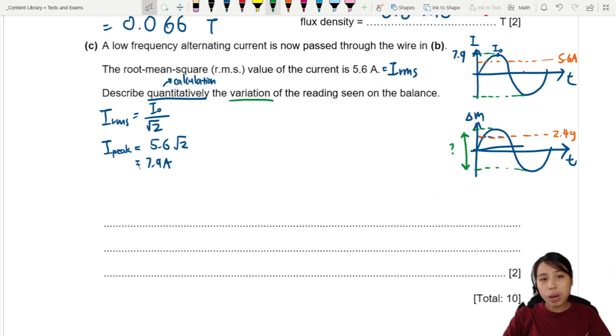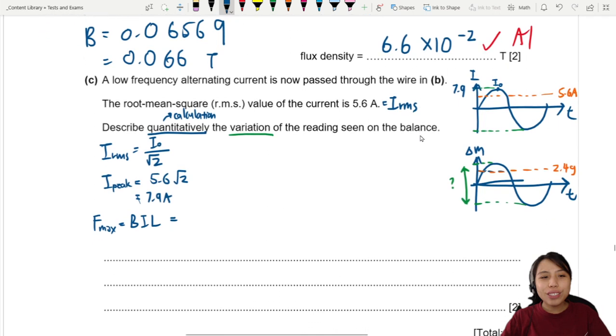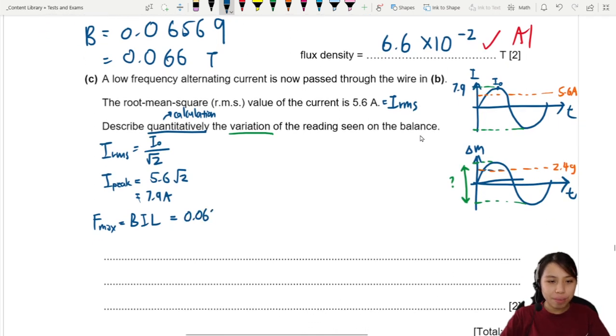Then the next step is you calculate. For 7.9, what is your force? So the maximum force. Let's try this. BIL sine theta, right? We just redo the thing again. So B, what's the B again? 0.066 Tesla times 7.9 times 6.4 times 10 to the negative 2. Okay. This will give us roughly 0.033 newtons.